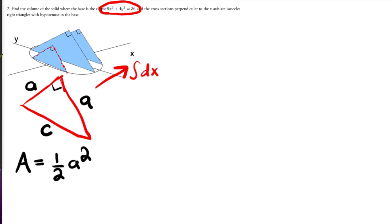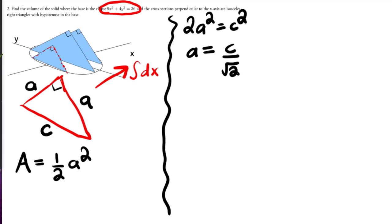Since we know the equation of this guy right here, we need to find what the length of this side is. The Pythagorean theorem tells us that A² + A² = C². So 2A² = C². That means that A is going to equal to C over the square root of 2. Now, let's figure out what C is equal to.